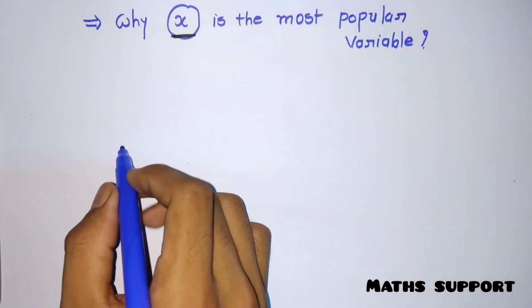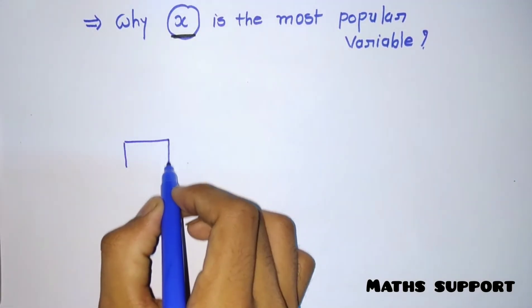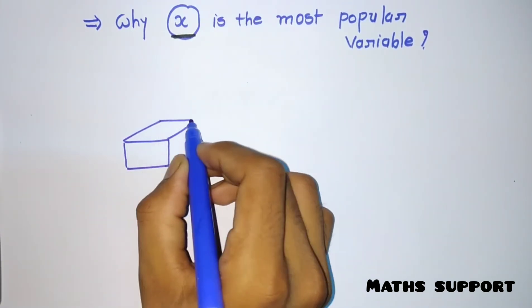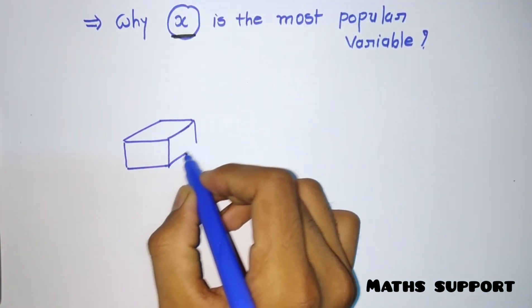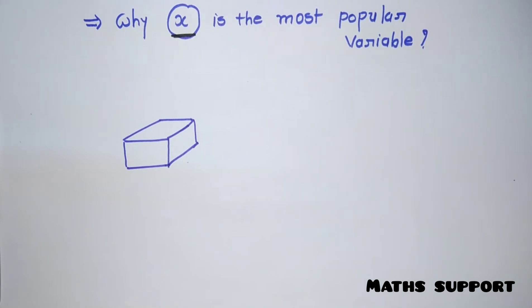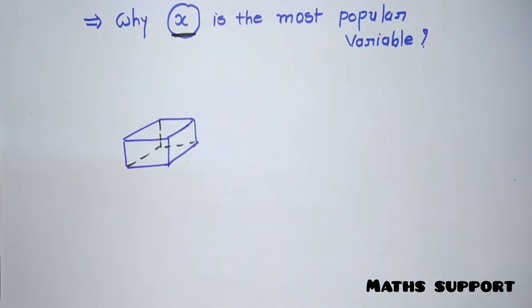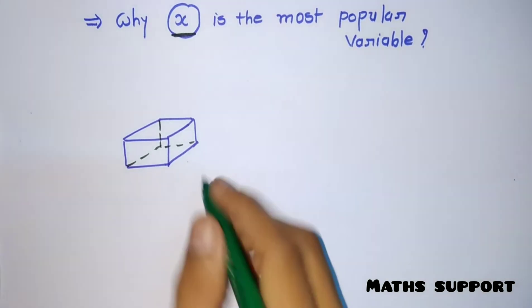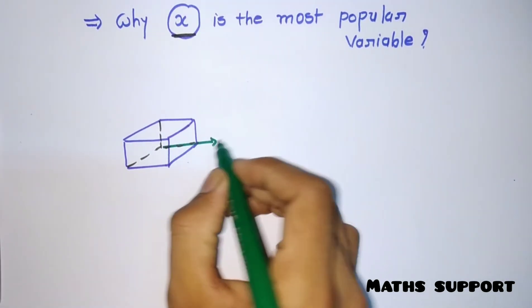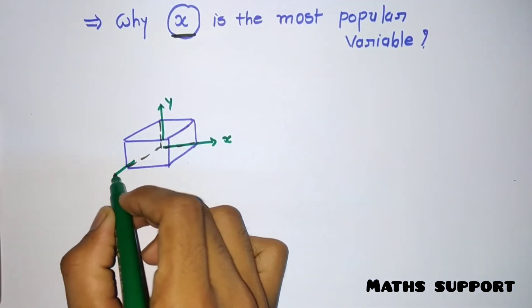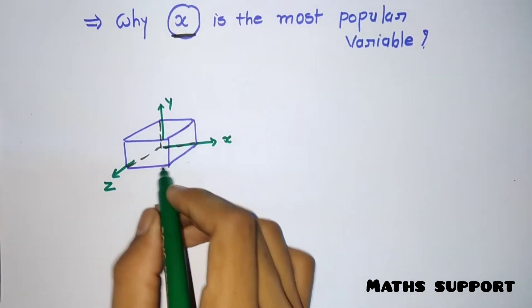Suppose I am drawing a figure - a three-dimensional cube. If I want to represent it graphically, then I need three axes: this is X, this is Y, and this is Z. For any kind of 3D shape, I require three axes: X, Y, Z.